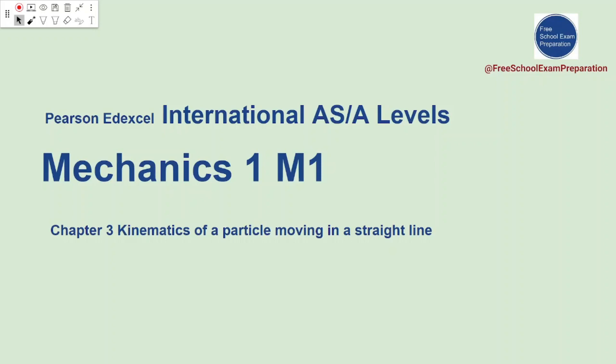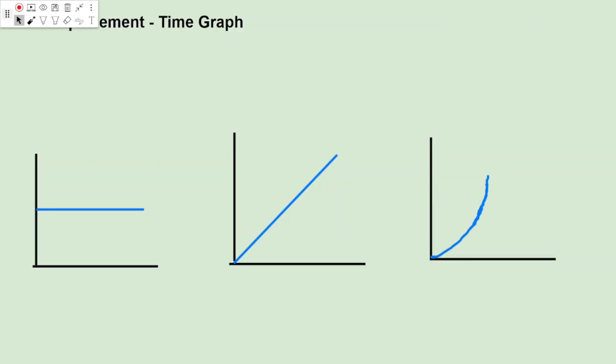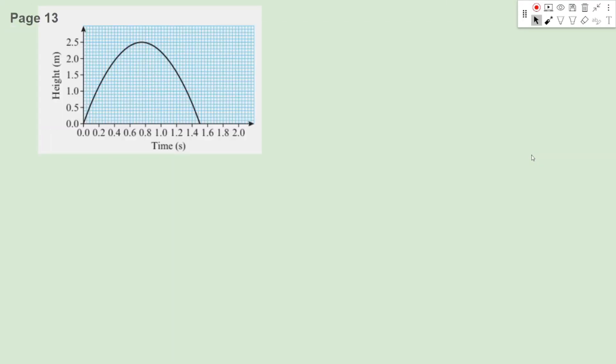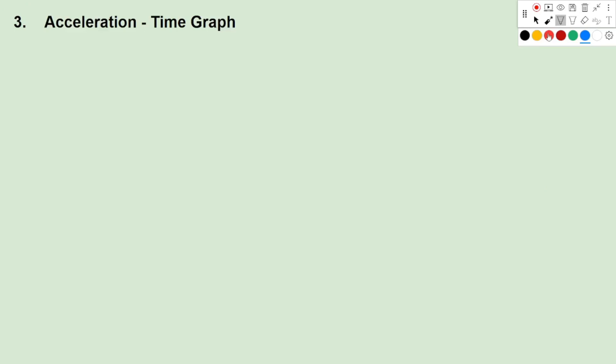Hello, welcome to Free School Exam Preparation. Today we're going to talk about Edexcel International AS and A Levels, Mechanics 1. In this lecture, we're going to continue with Chapter 3, Kinematics of a Particle Moving in a Straight Line. In previous lectures, we've talked about the displacement-time graph and the velocity-time graph. So today we'll take a look at the acceleration-time graph.